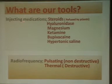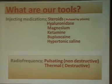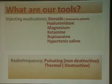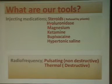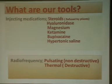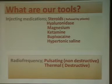For injections, we inject either steroids — which are refused by many patients, especially in Egypt where they have a very bad reputation — or we can use hyaluronidase, magnesium, ketamine, bupivacaine, hypertonic saline, or dye on the nerves or in the sleeve of the nerve in the anterior epidural space.